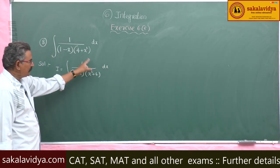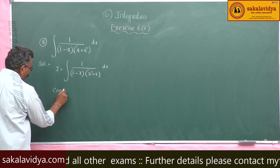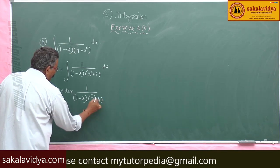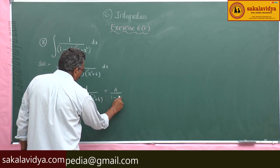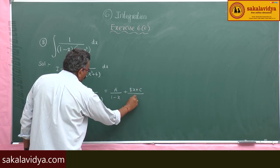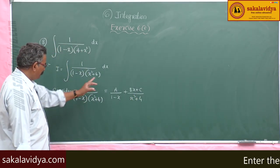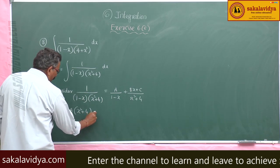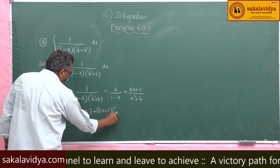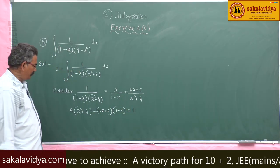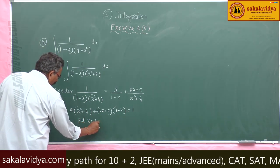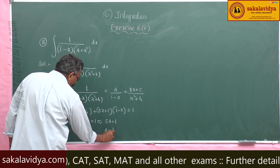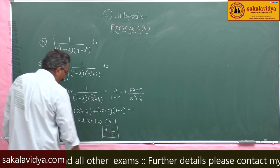Find partial fractions of 1 by (1 minus x)(x² plus 4). Consider 1 by (1 minus x)(x² plus 4) equals A by (1 minus x) plus (Bx plus C) by (x² plus 4). Multiply both sides by (1 minus x)(x² plus 4): A(x² plus 4) plus (Bx plus C)(1 minus x) equals 1. Put x equals 1: 1 plus 4 is 5, so 5A equals 1, giving A equals 1 by 5.